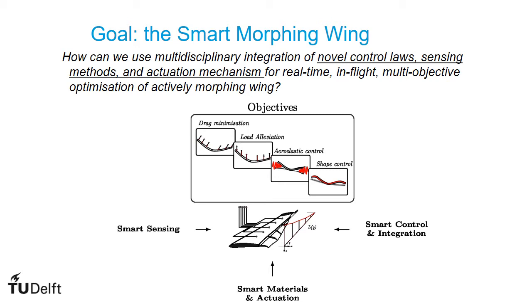The core of the morphing concept is to ensure real-time optimization of objectives, such as drag minimization, load alleviation, aeroelastic control, and shape control, with smart integration of sensing, material, and actuation. The main contribution of SmartX is to demonstrate this with a distributed morphing concept.